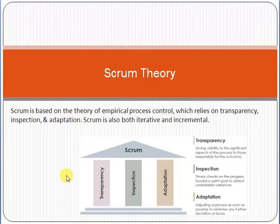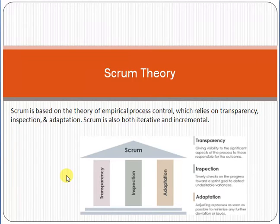Now, how does scrum come into the picture? Using the same e-commerce example with 40 tasks, here comes the concept of a sprint. A sprint is a three-to-four week time period. In sprint one, we take ten tasks and plan, develop, test, and deploy them. Sprint two takes the next ten tasks, sprint three the next ten, and sprint four the final ten — completing all 40 tasks across four sprints.